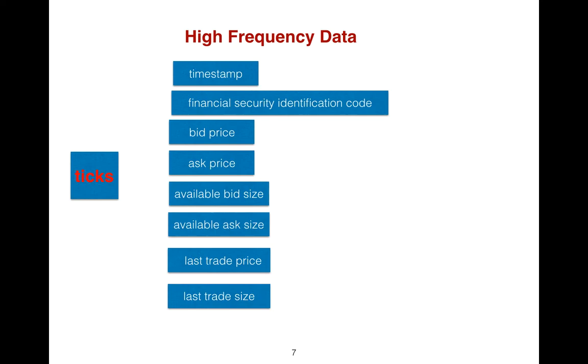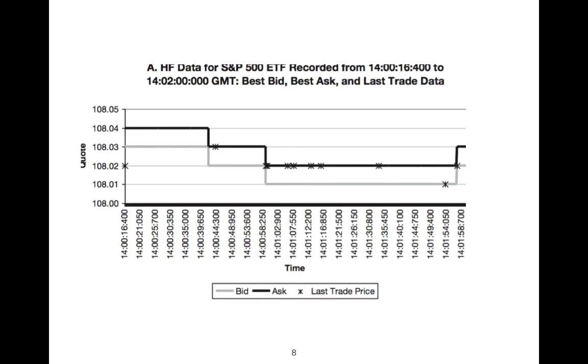We use a FIX protocol on top of TCP because we have required fields such as timestamp, financial security identification code, bid price, ask price, available bid size, available ask size, last trade price, and last trade size. This is an example of the quote for high-frequency data for S&P 500.